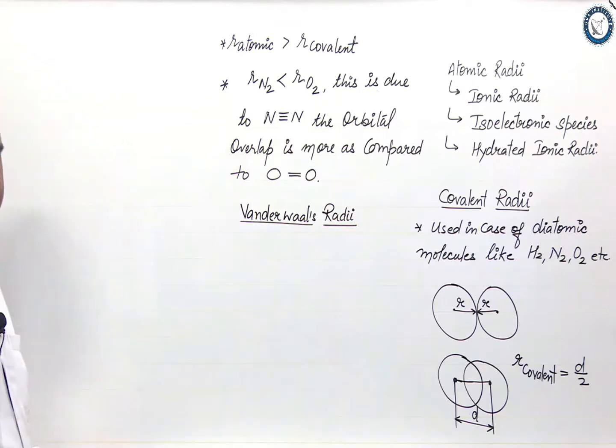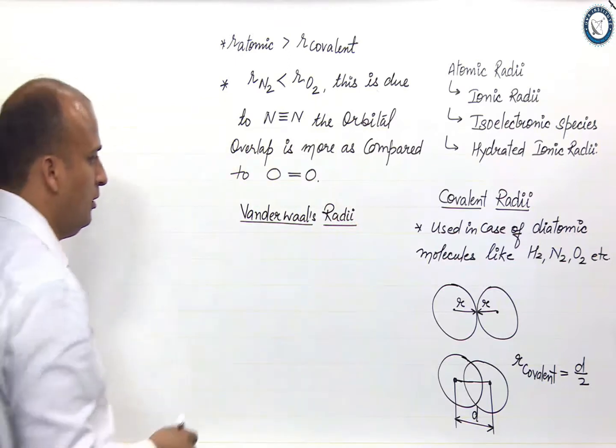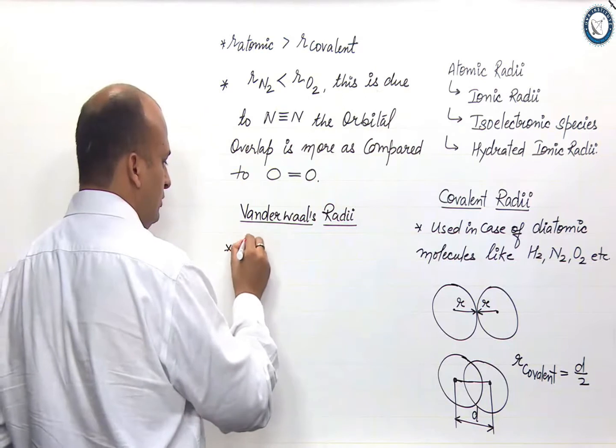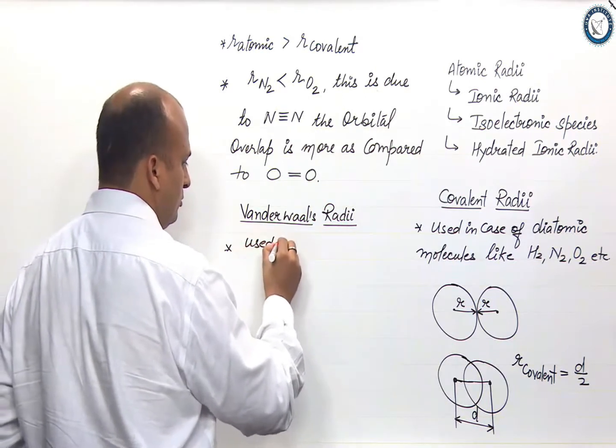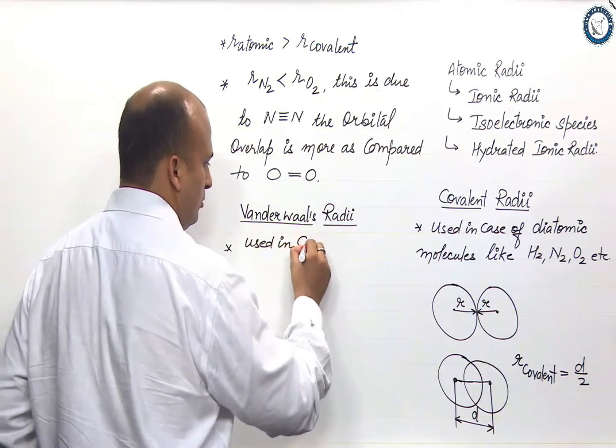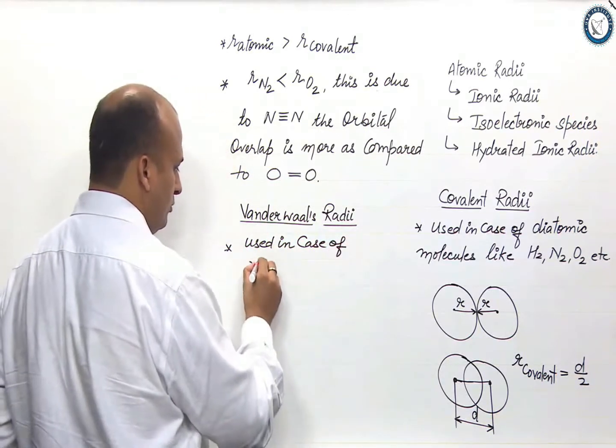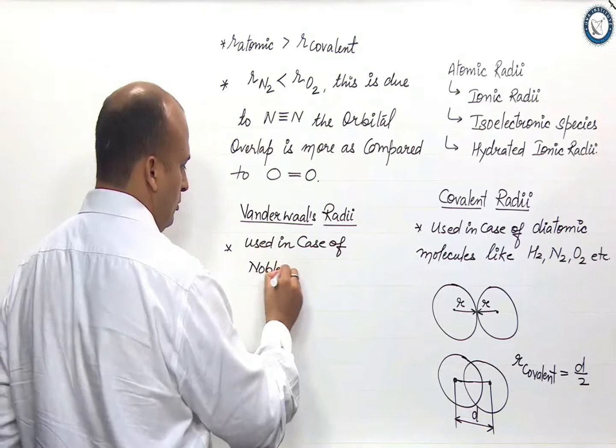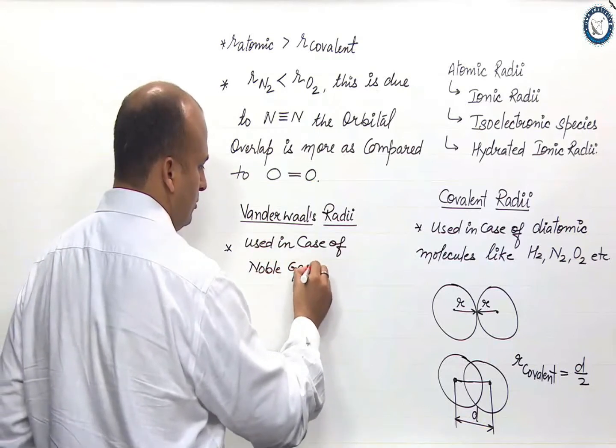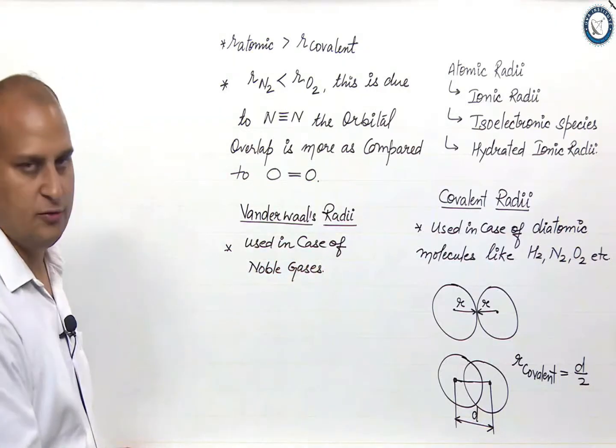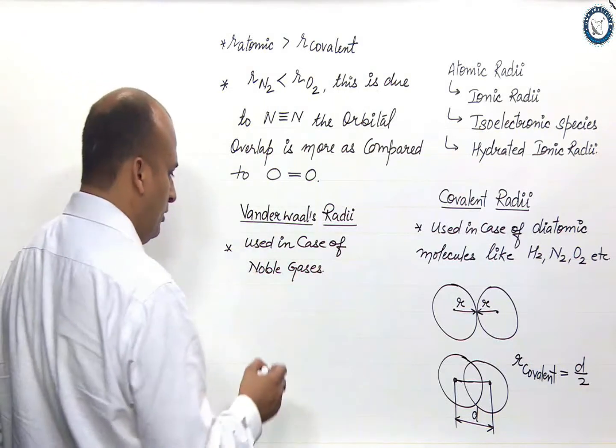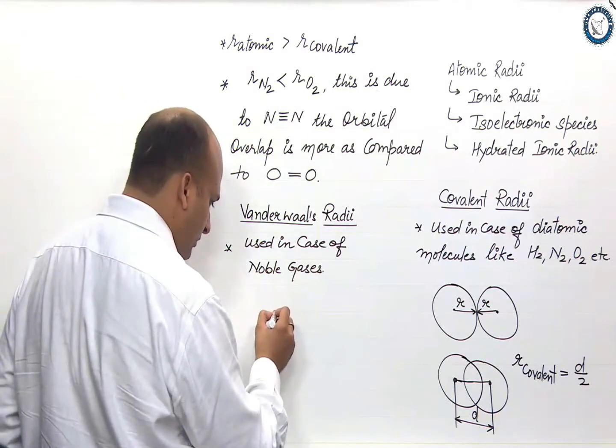Van der Waals radii is used in case of noble gases. This is used in case of noble gases. Now see what happens in case of noble gases.